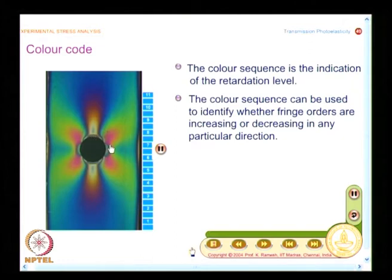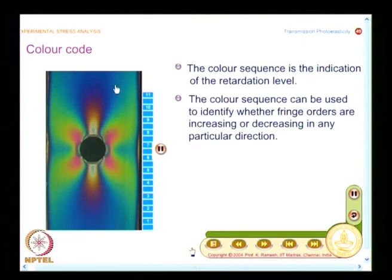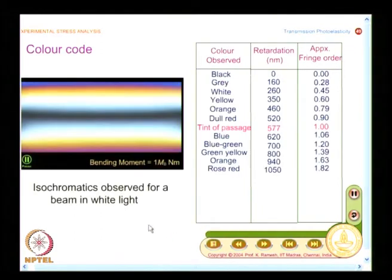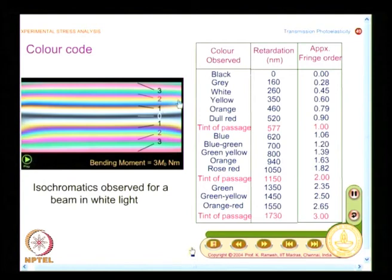In white light, you see a color code. What I have here is the problem of a plate with a hole, which is a stress concentration region. I have a color of black here, then white, and it moves out. You see a rich play of colors, and the play of colors gives an indication of the gradient of fringe variation. Here it is 0, here it is 1, so from 0 to 1, it increases in this direction. We also looked at the color code, where we identified for each color an approximate value of the retardation, up to fringe order 3.